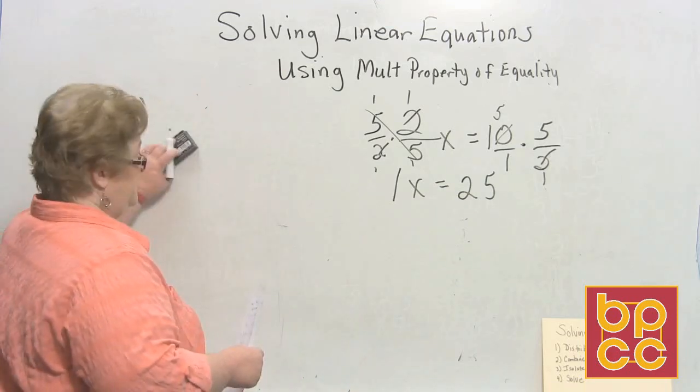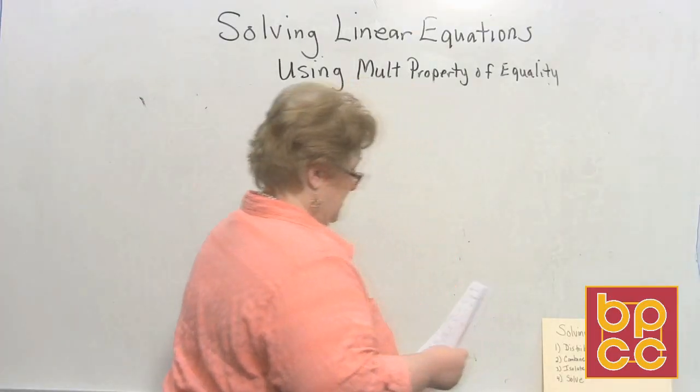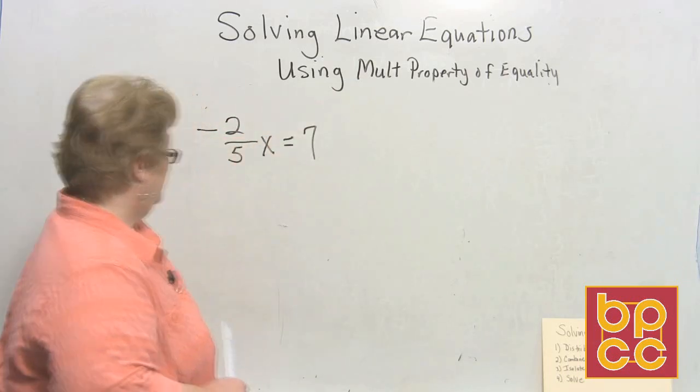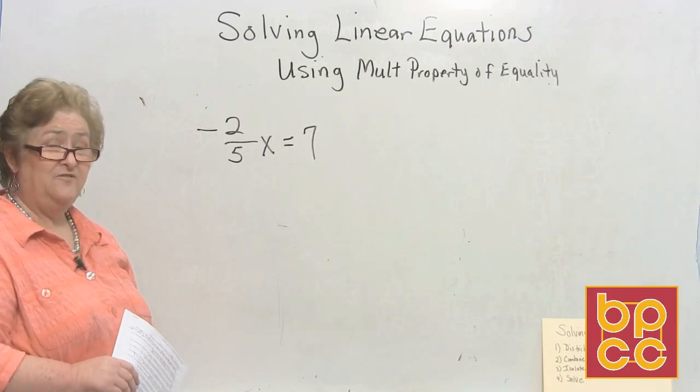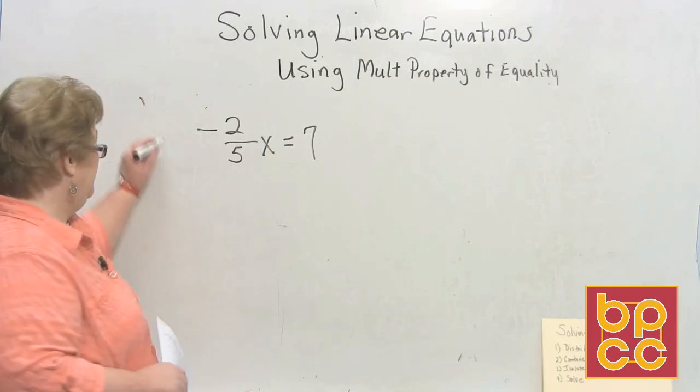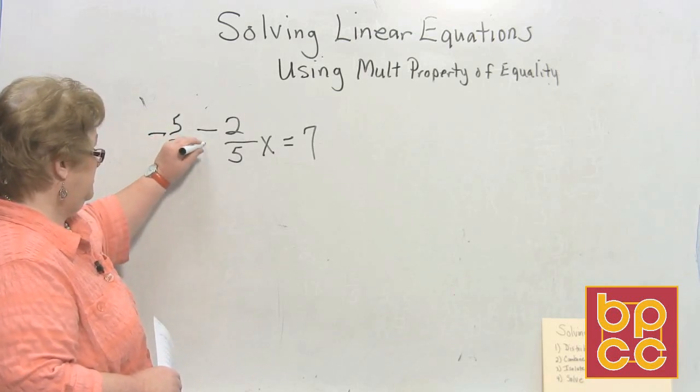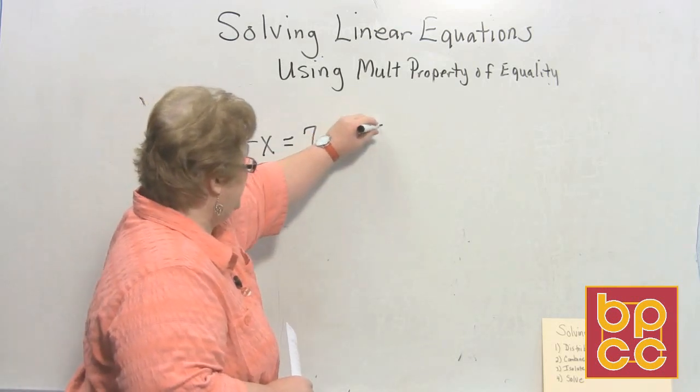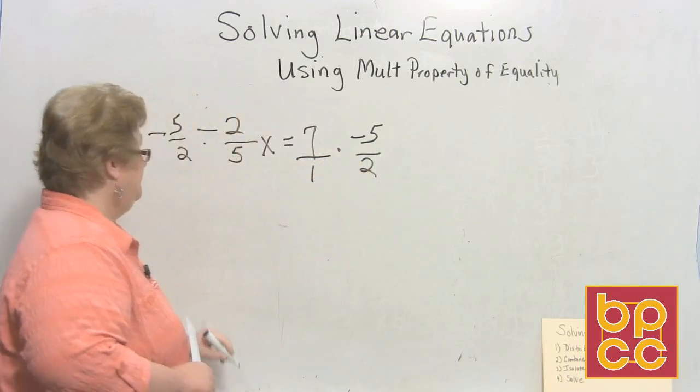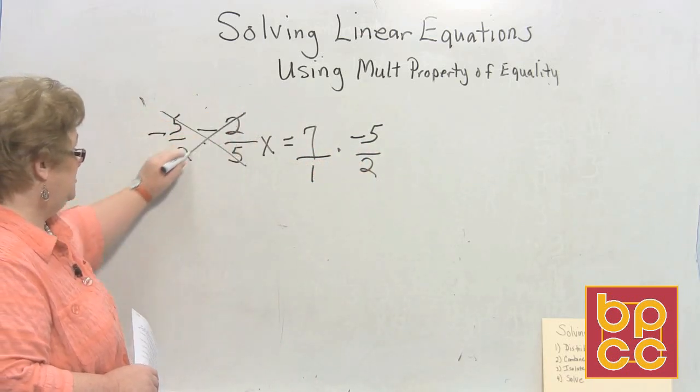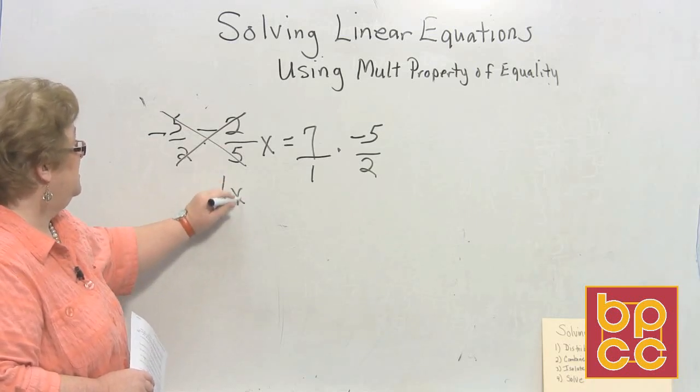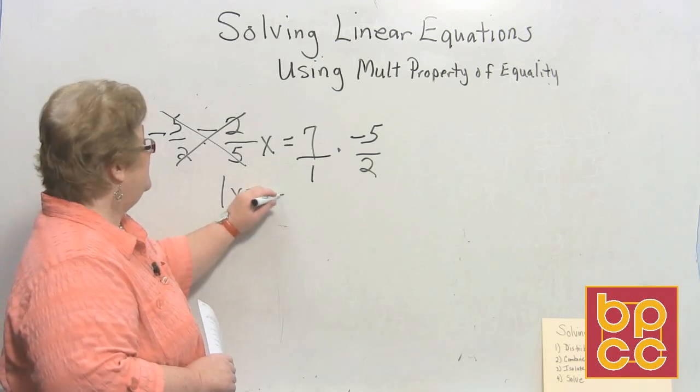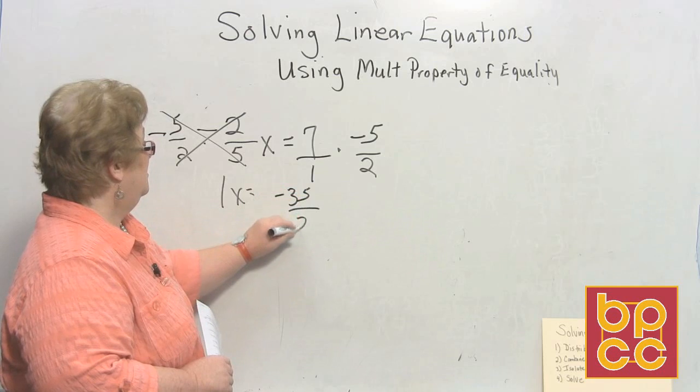This time I'm going to give you a negative fraction. I'm going to give you a negative 2/5 x equal 7. So the reciprocal on this is going to be a negative 5 over 2 to be multiplied by both sides. A negative 5 over 2 times negative 2/5, and I'll put 7 over 1 times a negative 5 over 2. As you can see, this clears out. Two negatives make a positive, so we have 1x. And I'll multiply the top times the top and the bottom times the bottom. 7 times a negative 5 is a negative 35 over 2.